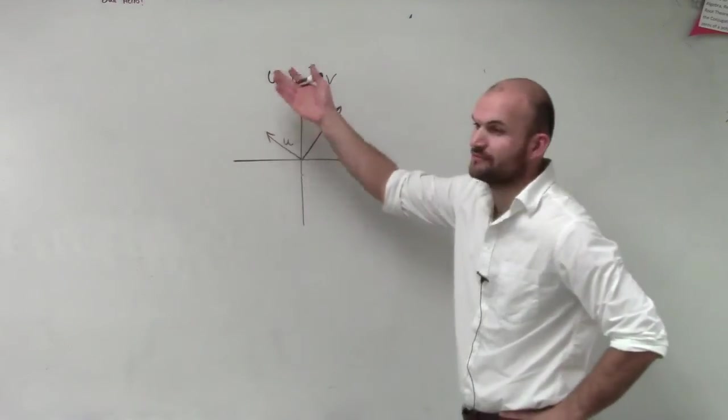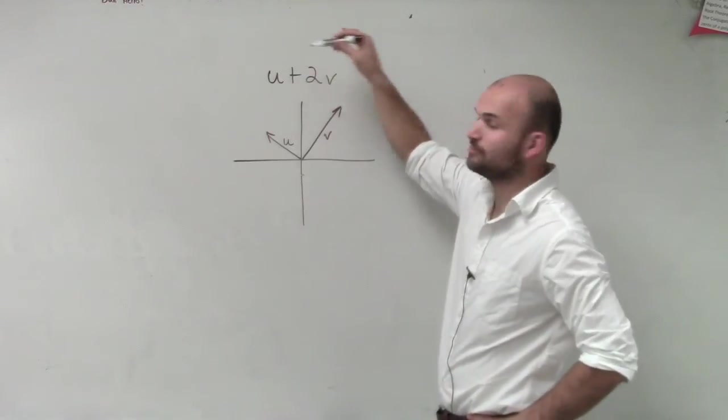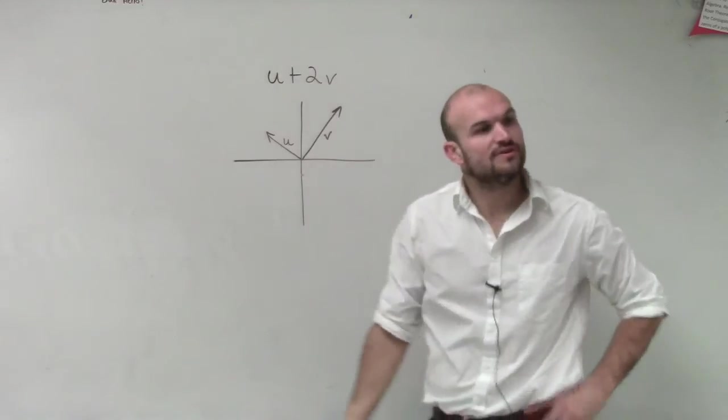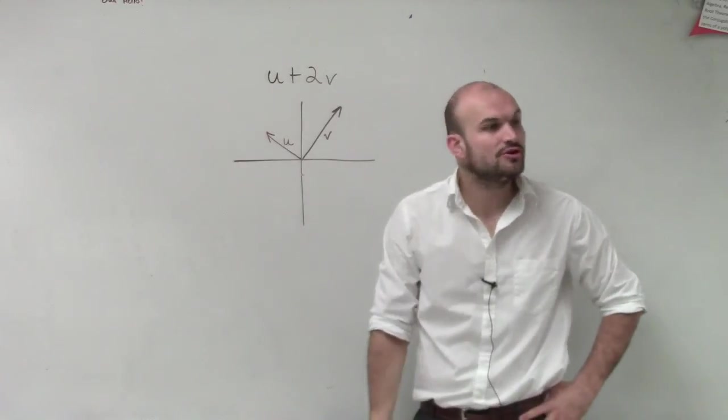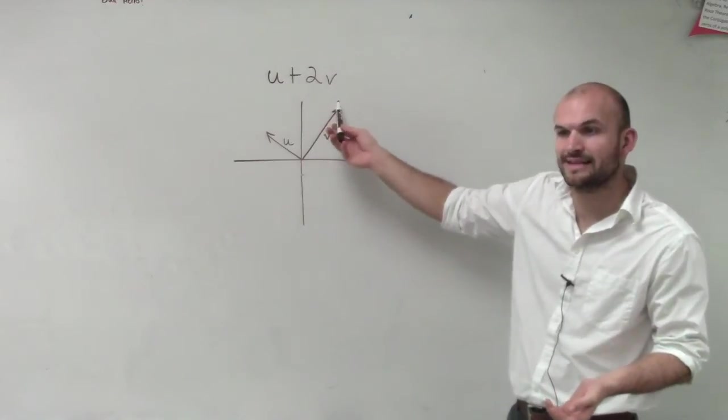What we're going to do, first of all, is we have u, and then we have v. But now they're saying, I want you to add u, but not to u plus v. I want you to do u plus 2v. So first of all, we need to determine what is 2v going to look like. Well, 2v is a scalar,